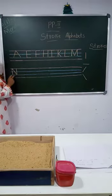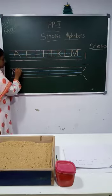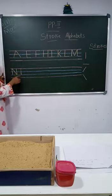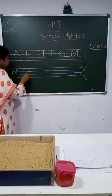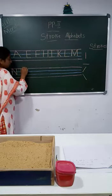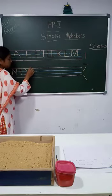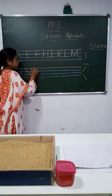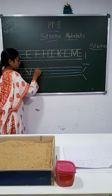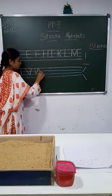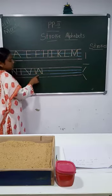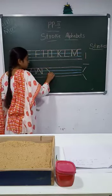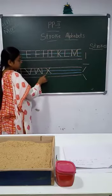Then letter T: sleeping line at top, standing line — letter T. Then letter V: right slanting line, left slanting line — letter V. Letter W: left slanting line, left slanting line — letter W. Letter X: right slanting line, left slanting line — letter X.